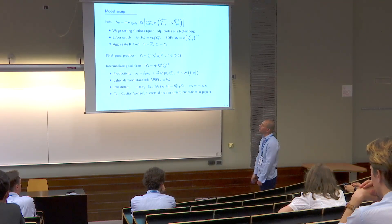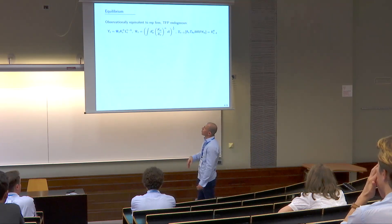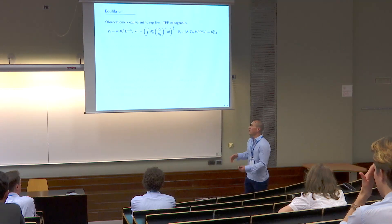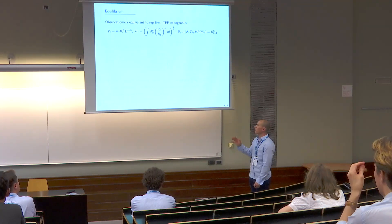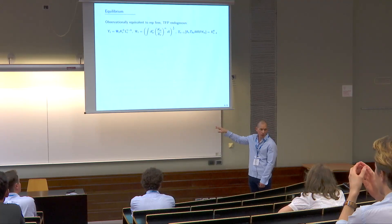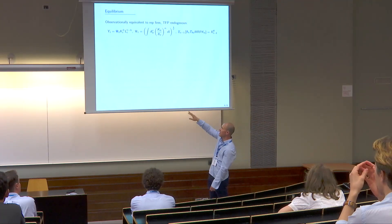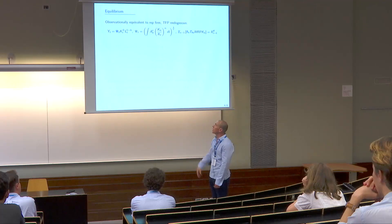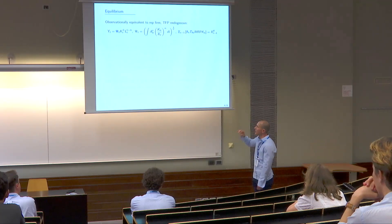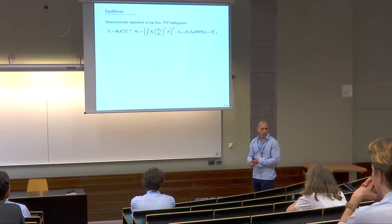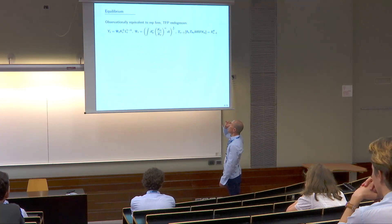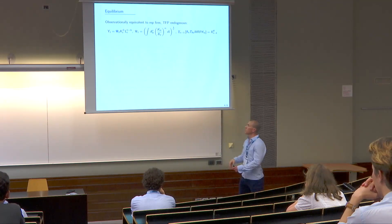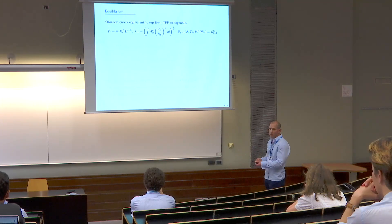That's basically the setup of the model. In a first result, we show that despite this rich heterogeneity, from a macro point of view the economy is observationally equivalent to a representative firm economy — but where TFP is endogenous. In the left-hand equation I define aggregate TFP as the Solow residual. In the middle equation, TFP equals a weighted average of all firm-level productivities A_it, weighted by their shares of the capital stock. In the third equation, capital shares are determined by the firm's investment optimality conditions.